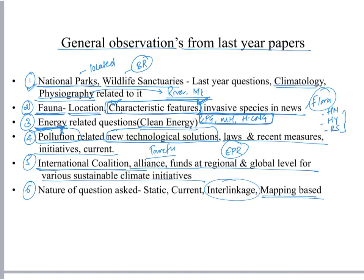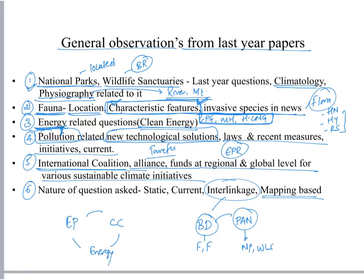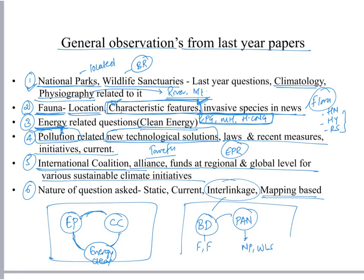The questions asked are nowadays more interlinked and mapping-based. Biological diversity topic should be studied with the protected area network topic — when studying flora and fauna, one should also study national parks and wildlife sanctuaries. When studying environmental pollution, one should study climate change related topics, and along with this, energy and research and development topics — environmental pollution, climate change, and clean energy should all be studied together.